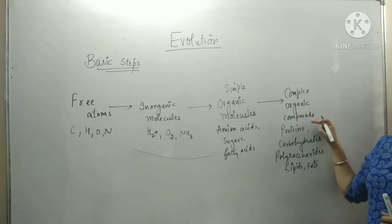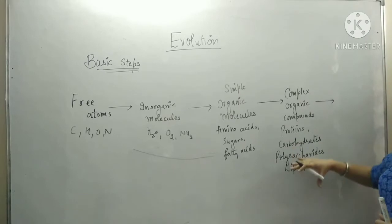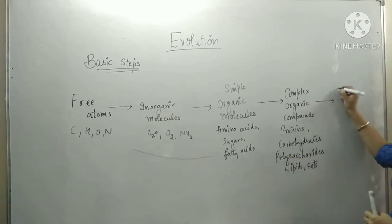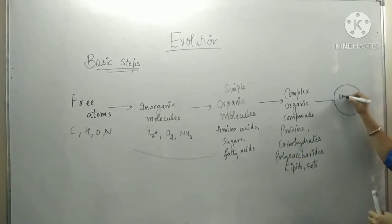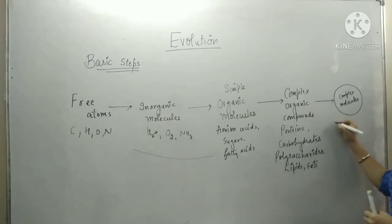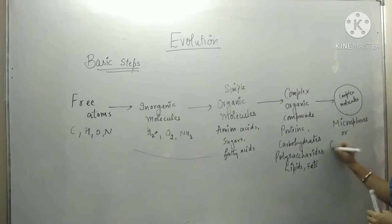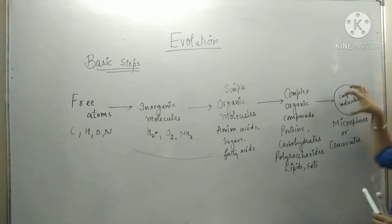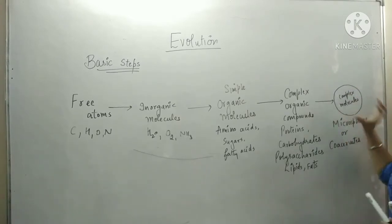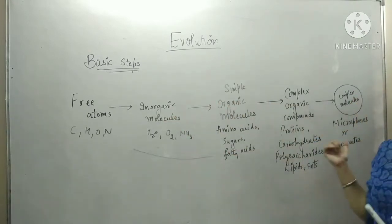These complex organic compounds were surrounded by fatty acid membranes in nature. When complex molecules are surrounded by fatty acid membranes, we give them the name microspheres, because they were very small in size, or we call them coacervates. Simply, complex molecules were surrounded by a membrane. So in evolution, we started from free atoms and now we have coacervates and microspheres.